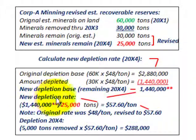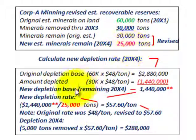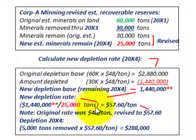For the new depletion rate, we take the new depletion base — the remaining amount of $1,440,000 — and divide it by the new estimated tonnage remaining in the land, which was revised to 25,000 tons in 20x4. Dividing $1,440,000 by 25,000 tons gives us a new depletion rate of $57.60 per ton.